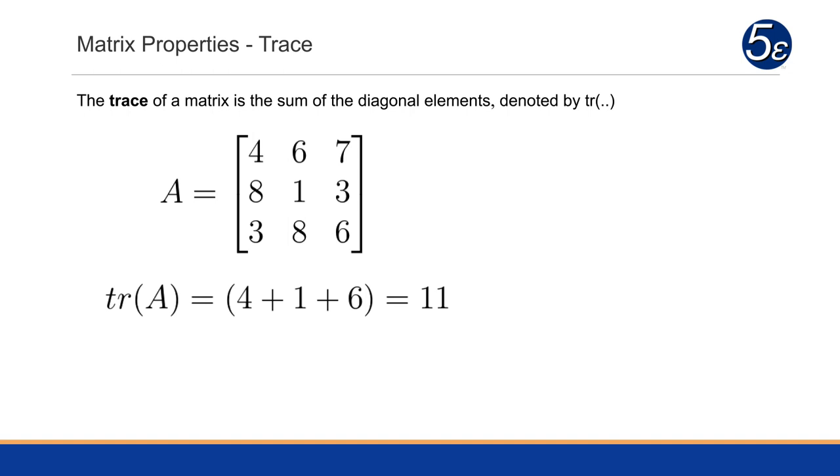And this is used widely later on when we're dealing with various aspects of the covariance matrix, especially dealing with the variance of particular variables. So here, the trace is 4 plus 1 plus 6, which is 11.